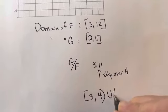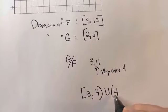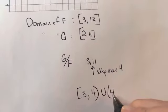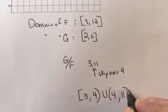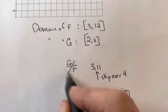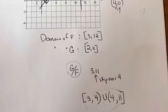So whenever you need to skip over a number, it looks like this. I can use everything really close to 4 on the other side, and then I'm going to go to 11. So this would be the domain of g over f. And that's it.